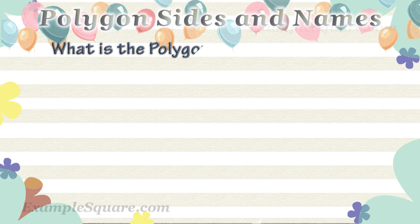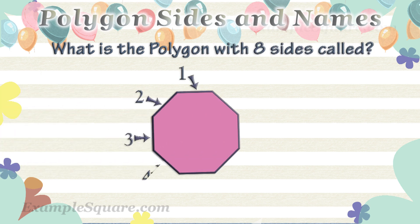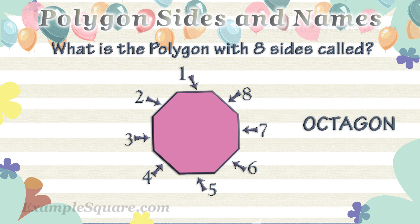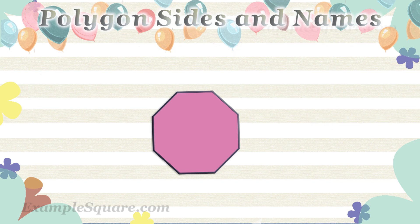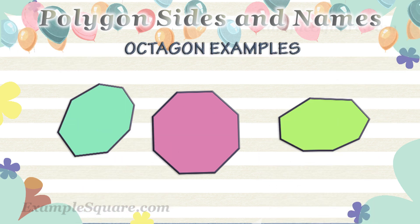What is a polygon with 8 sides called? A polygon with 8 sides is called an octagon. These are some examples of octagons.